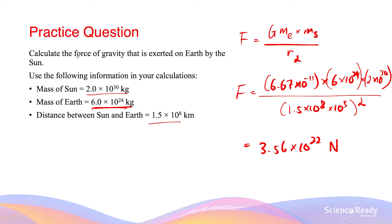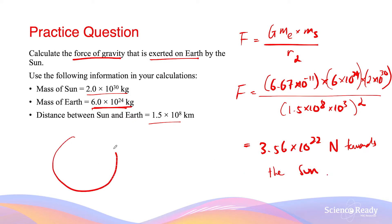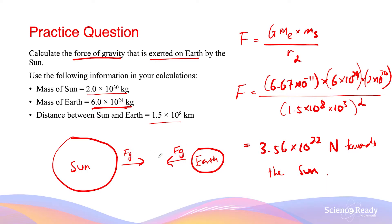In terms of direction, since we're calculating the force exerted on Earth, the direction is towards the Sun. This can be visualized with a simple diagram showing the Sun and planet Earth with a force of attraction between them — labelled Fg on each side. The magnitudes of the two forces are equal, but their directions are opposing. The force on Earth points towards the Sun; the force on the Sun points towards Earth — same magnitude but opposite directions.